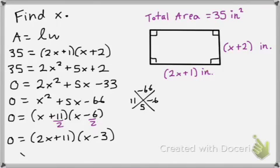So we have 0 equals 2x plus 11 and x minus 3. So using the zero product property, I can see that x would equal negative 11 halves or 3. Now, once again, you need to look at the equation. Do these answers make sense?